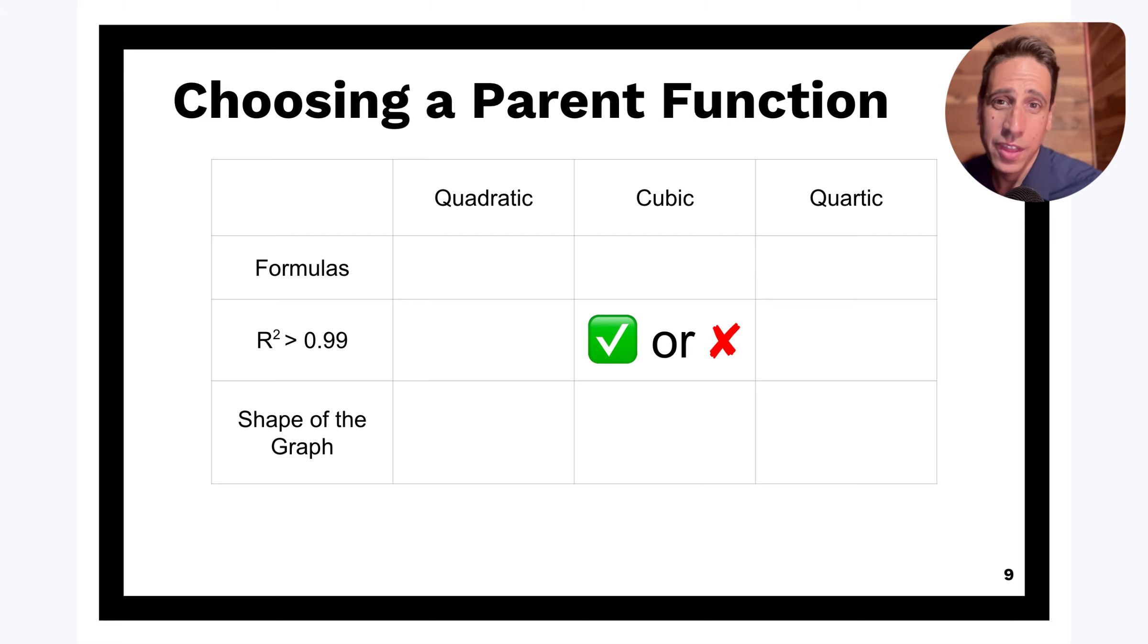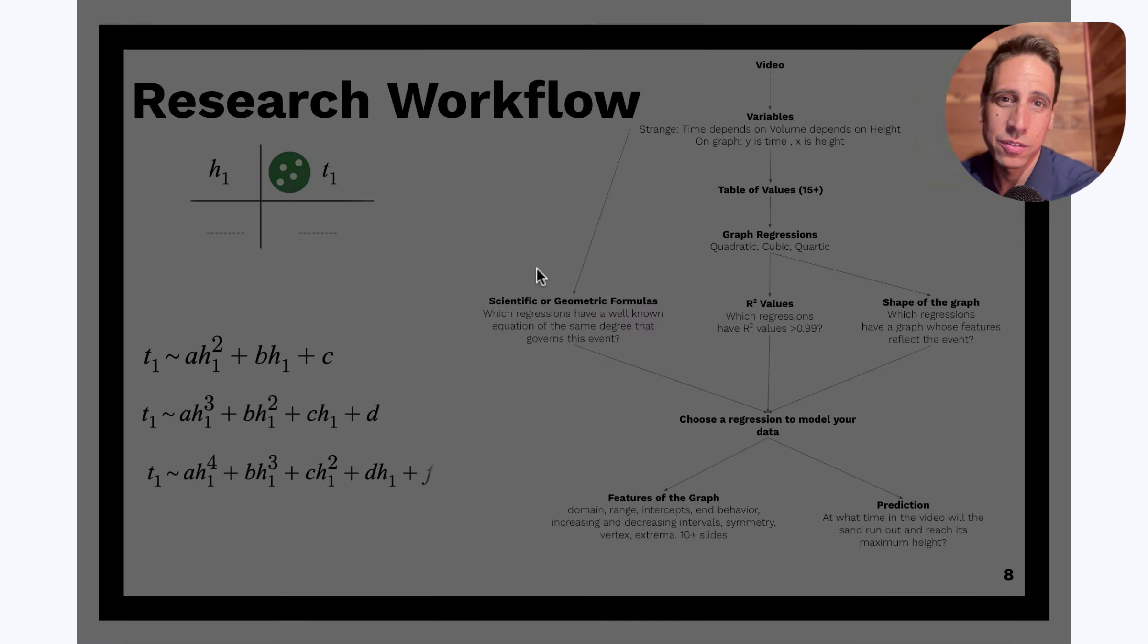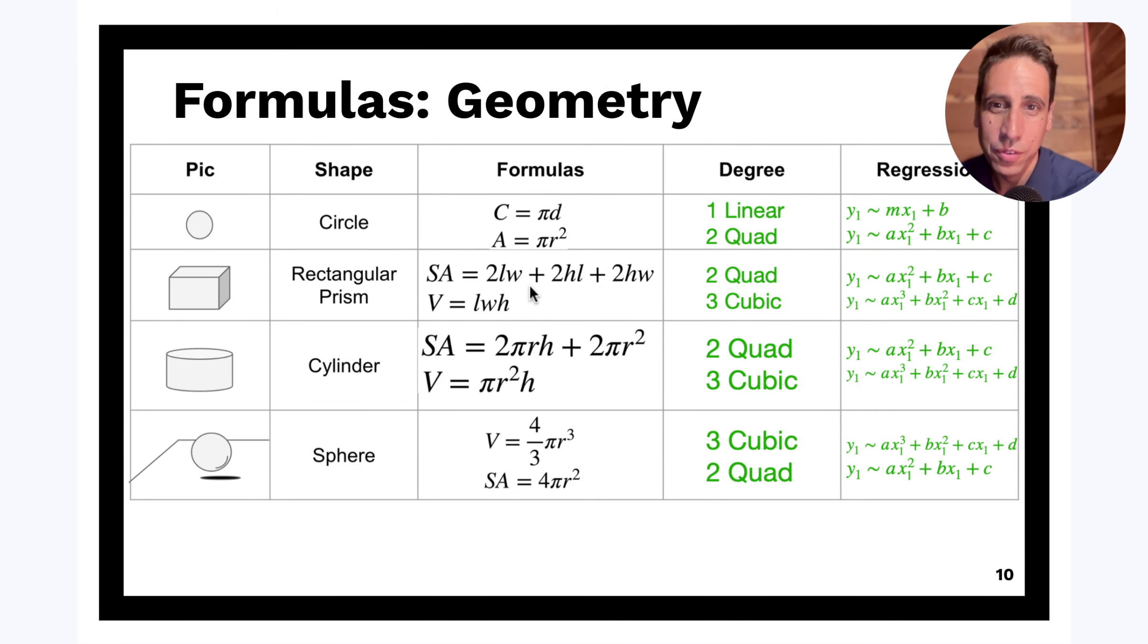And are we looking at the volume or the circumference or the surface area of that shape that is increasing with time? And so that is going to be either quadratic or cubic or quartic. So looking at this, are we looking at the surface area or the volume or the circumference? And then what degree is that? And if you know what degree, the phenomenon that you're looking at, then you can choose the right regression.